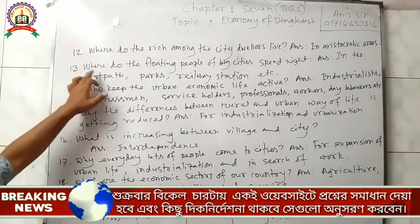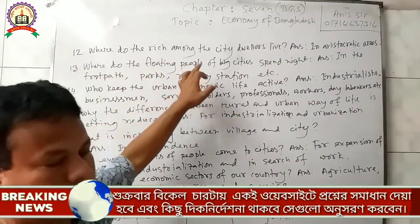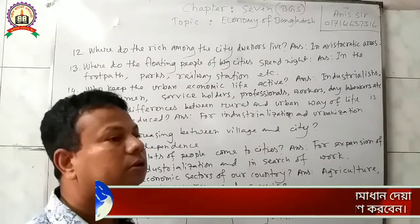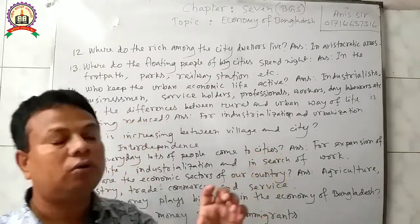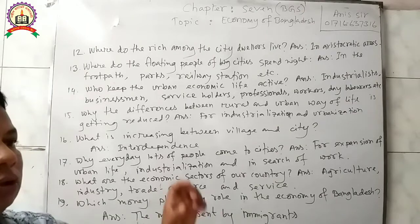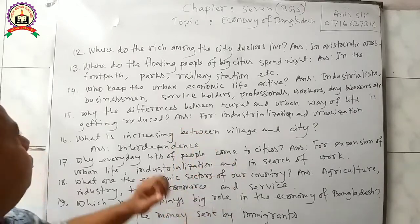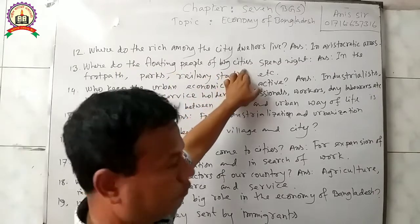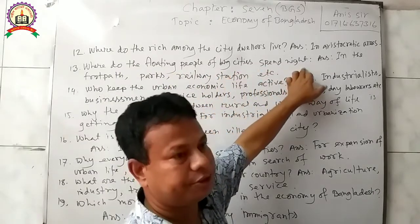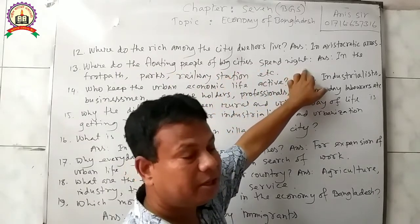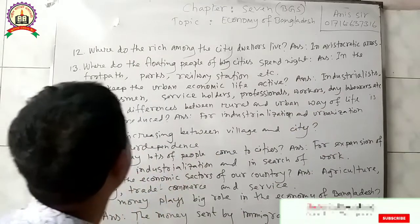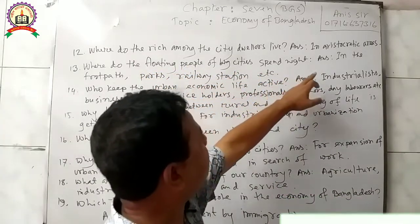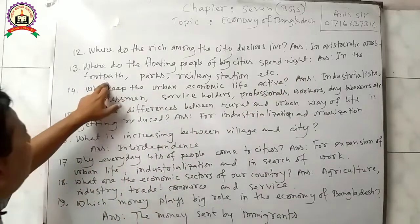Question 13: Where do the floating people of big cities spend the night? Floating people means those who have no house. Answer: The floating people of big cities spend the night on the footpath, in parks, railway stations, etc.